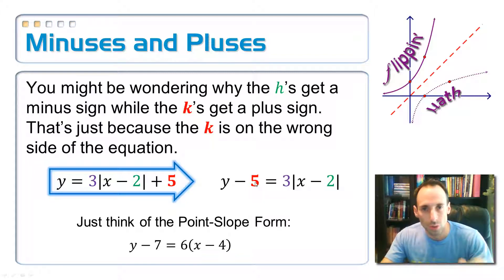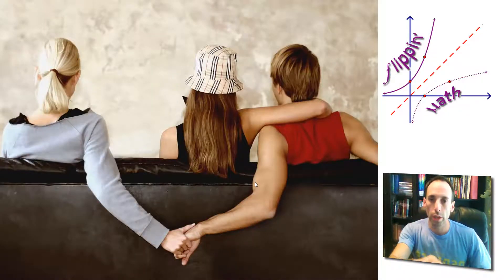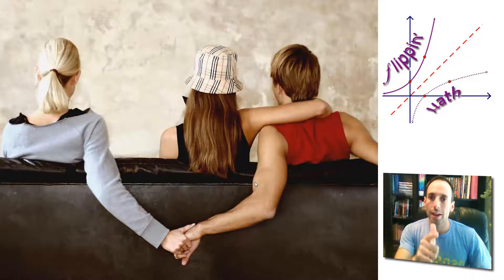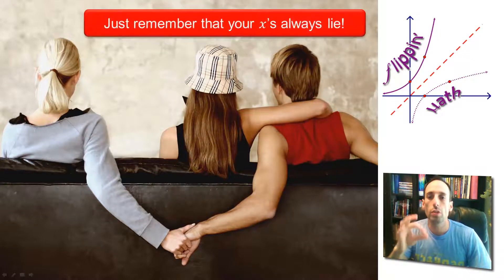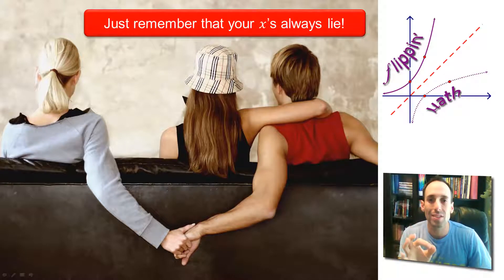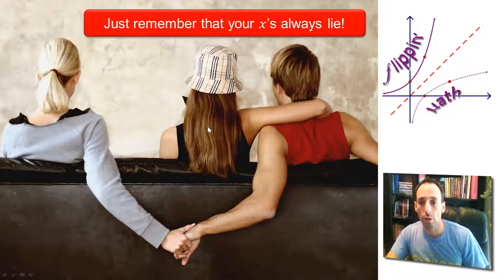If that confuses you, don't worry about it. Here's an easier way to think of it. Take a look at this picture here. You can see that you've got a boy. He's cheating. This guy has to be lying to his girlfriend. So what you just want to remember is that your x's always lie. X's are the boys. They're always lying.